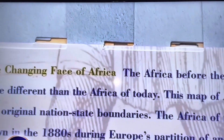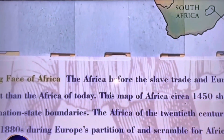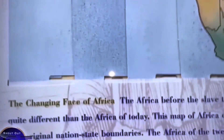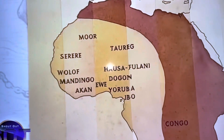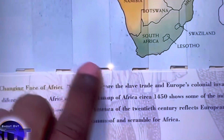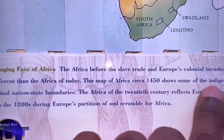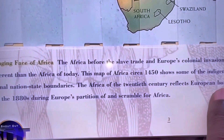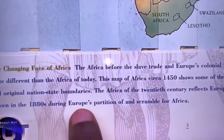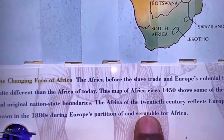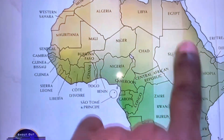The changing face of Africa: the Africa before the slave trade and Europe's colonial invasion looked quite different than the Africa of today. This map of Africa circa 1450 shows some of the indigenous groups and original nation-state boundaries. The Africa of the 20th century reflects European boundaries drawn in the 1800s during Europe's partition and scramble for Africa — you can Google 'Scramble for Africa' to see all the European nations in attendance and how Africa was divided up amongst them.